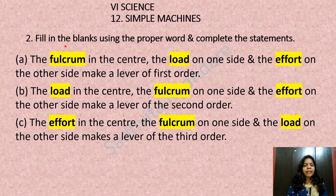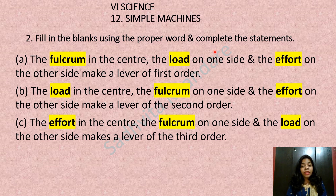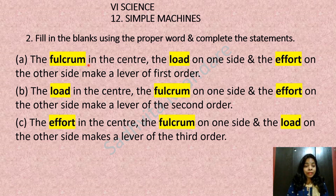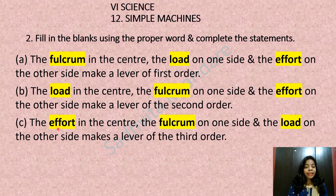Next question: fill in the blanks using the proper word. In the lever of first order, the fulcrum is in the center and the load and effort are on the two sides. In the lever of second order, the load comes in the middle. We can remember this as FLE — F: fulcrum in the middle for first order, L: load in the middle for second order, E: effort in the center for third order, with the fulcrum on one side and the load on the other side.